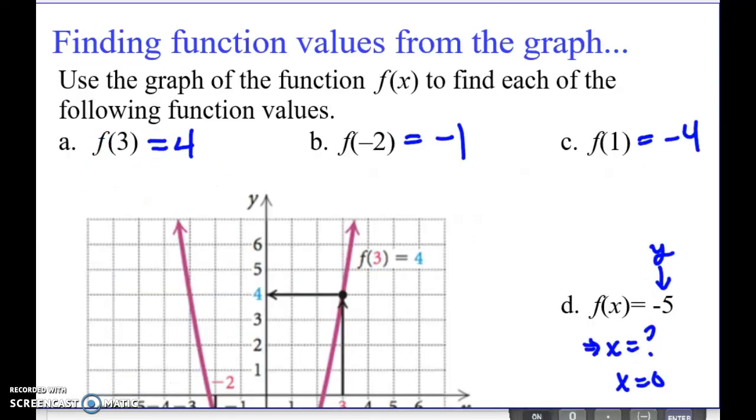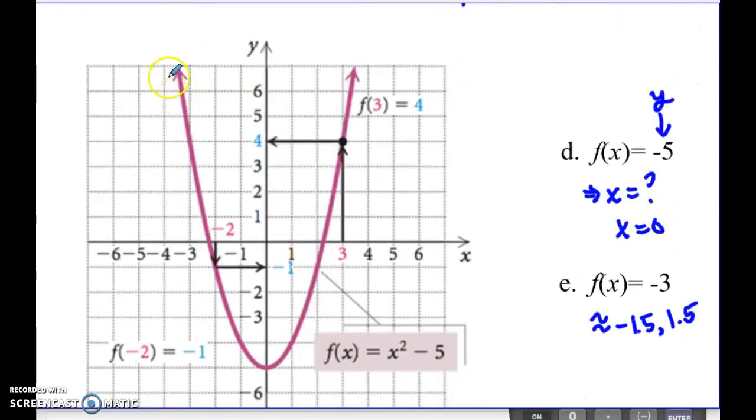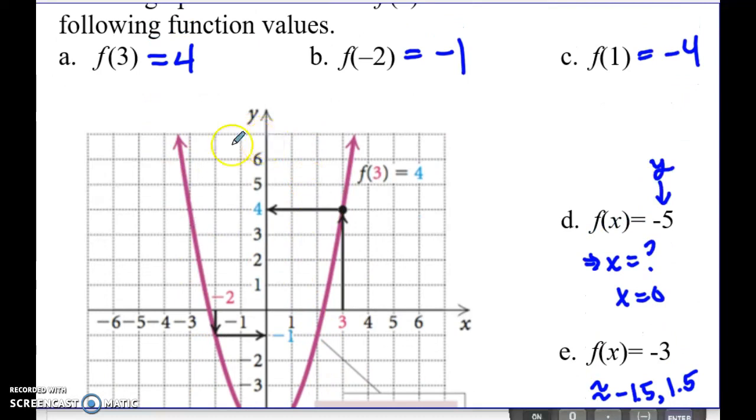What about if we're given the graph and we want to do some reading from it? That helps me make sure that you really get the notation with these. So in this case, we have a graph here, this pink parabola, or red, whatever you want to call it, and they're telling me to find the f of 3 value.